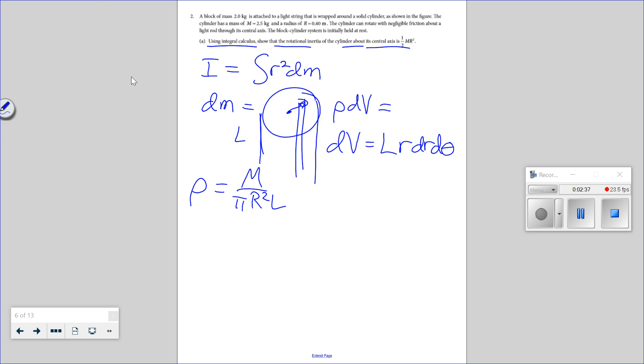My density is going to be the mass of the cylinder over pi R squared L. An element volume, we're going to do like tubes here and add them up. It says uniform density cylinder, right? It sure does. So my volume element is going to be L for the tube, and then it's R dr d theta.